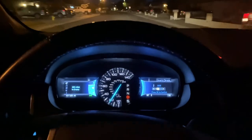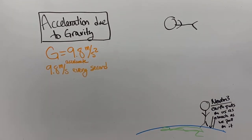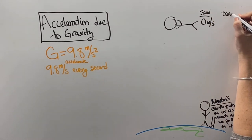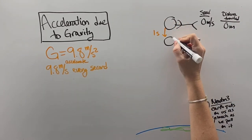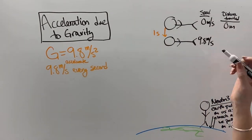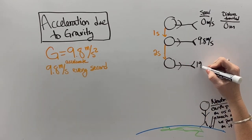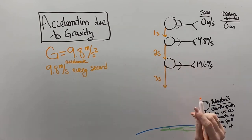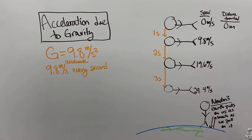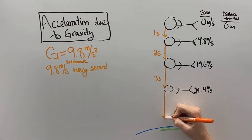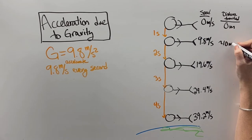We could have an acceleration of five miles per hour per second. Gravity is a positive acceleration that makes things fall faster: 9.8 meters per second every second. So if you were in an airplane and decided to go skydiving, after one second you would fall 9.8 meters per second faster than before. After two seconds you would be going 19.6 meters per second, and after three seconds you would be going 29.4 meters per second. After four seconds you would be falling 39.2 meters per second.